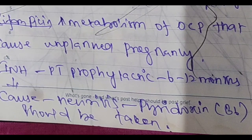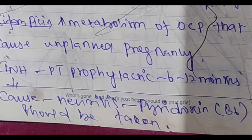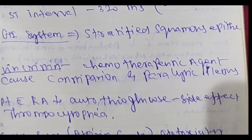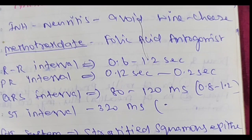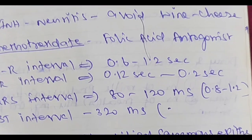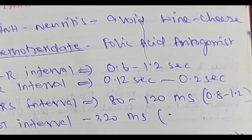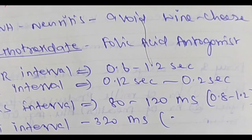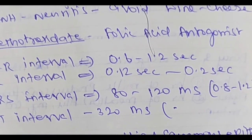INH — isoniazid. Avoid wine and cheese. Metronidazole — also avoid wine and cheese. So both INH and metronidazole: patient should avoid wine and cheese.